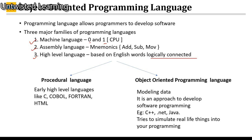High level languages are classified into two types: procedural languages and object oriented programming languages. Early high level languages like C, COBOL, FORTRAN, or HTML are basically procedural languages.